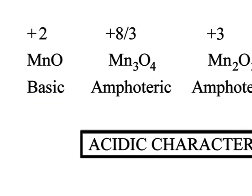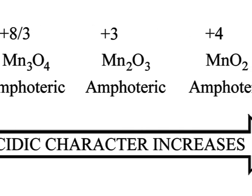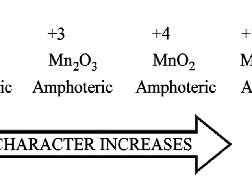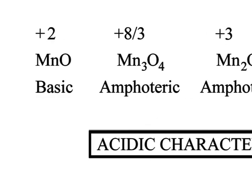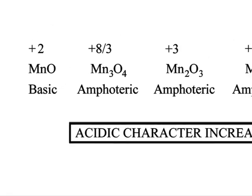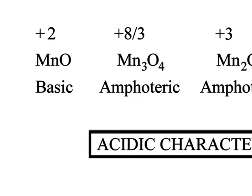After studying about oxidation states of manganese oxides and their ionic character, now we will focus on their acidic character. Acidic character increases in the shown manner, from MnO to Mn₂O₇. First, we will discuss the nature of MnO. Manganese is shown to have plus 2 oxidation state in MnO, and it is basic in nature.